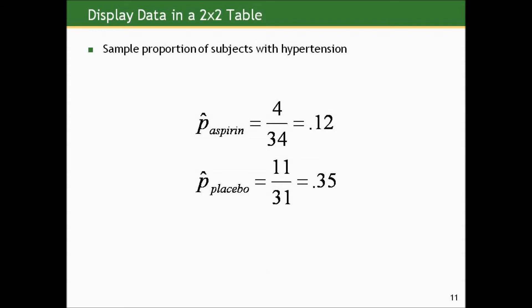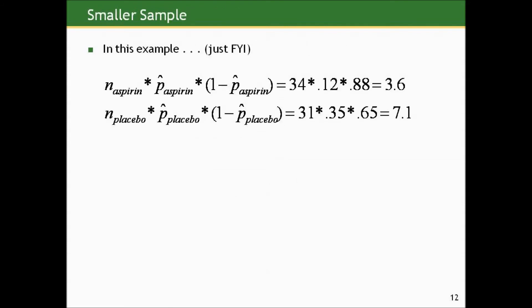By our criteria for smaller or larger samples, we look at the product of N times P hat times 1 minus P hat for each of the groups. And here, that product is 3.6 and 7.1 for the aspirin and placebo respectively. The lower these are, they're going to be positive numbers, but the smaller these are, the smaller the sample is in terms of whether or not the central limit theorem will kick in. So these are small samples, relatively speaking. And again, I don't want you to worry so much about this detail or calculating it. I'm just trying to remind you that smallness versus largeness with binary outcomes is defined by the split of yeses and nos in addition to the overall sample size.